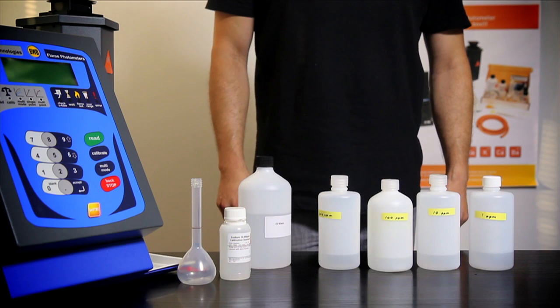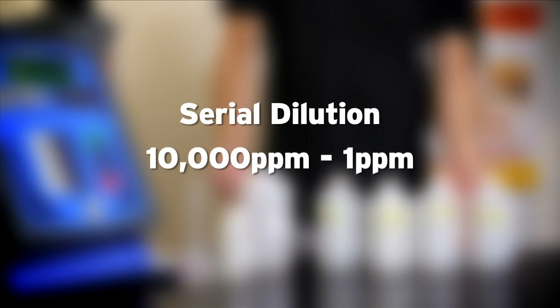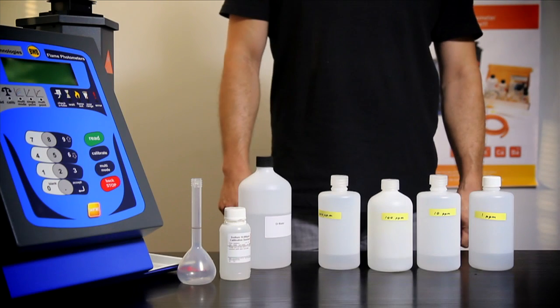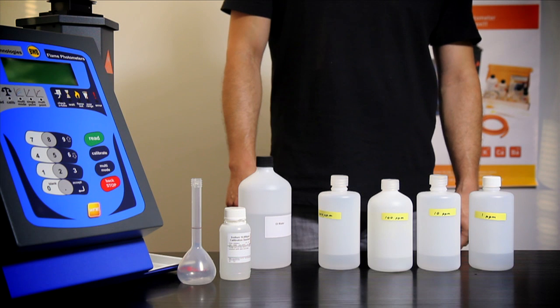Welcome to the BWB Technologies tutorial series. Today we will show you how to do a serial dilution from 10,000 parts per million to 1 part per million for use with your BWB XP flame photometer.